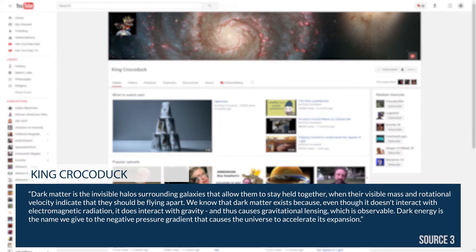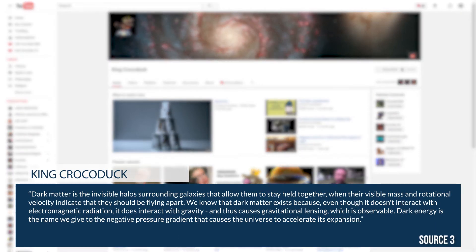Quote: Dark matter is the invisible halos surrounding galaxies that allow them to stay held together when their visible mass and rotational velocity indicate that they should be flying apart. We know dark matter exists because even though it doesn't interact with electromagnetic radiation, it does interact with gravity and thus causes gravitational lensing which is observable. Dark energy is the name we give the negative pressure gradient that causes the universe to accelerate its expansion.